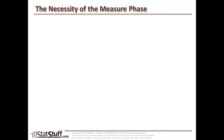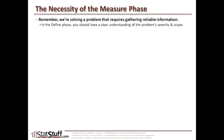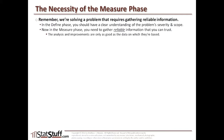If you recall, what we're doing is following the DMAIC methodology, where we're trying to solve a problem. It's critical that while we're solving that problem, we gather reliable information. In the define phase, we said we had to have a clear understanding of the problem's severity and scope. Now that we've moved on to the measure phase, we need to gather reliable information we can really trust, all related to that problem. The analysis and improvements we'll eventually get to are only going to be as good as the data we're collecting now. That's why I believe the measure phase is probably the most critical and yet the most neglected phase through the whole DMAIC methodology.